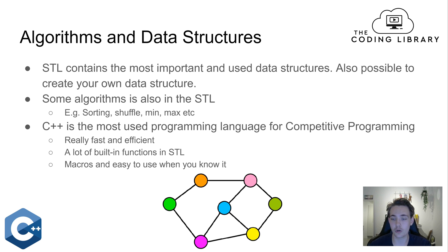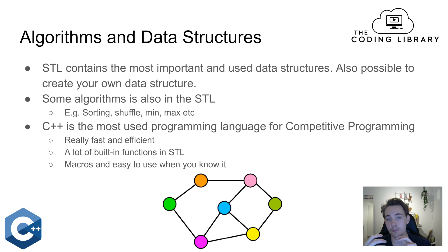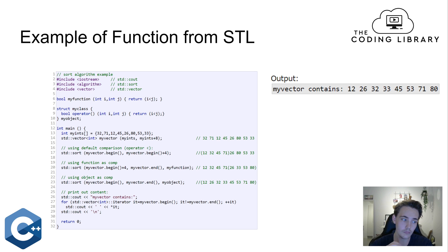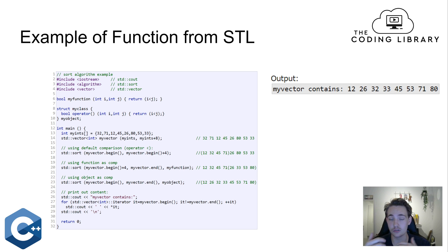C++ is the most used programming language for competitive programming because it is really fast and efficient. We can write really good low-level code, and there are a lot of built-in functions in STL we can use. We can also define macros if we want to write our program as fast as possible, which is what we want in competitive programming. That's why most competitive programmers use C++ as their primary language.